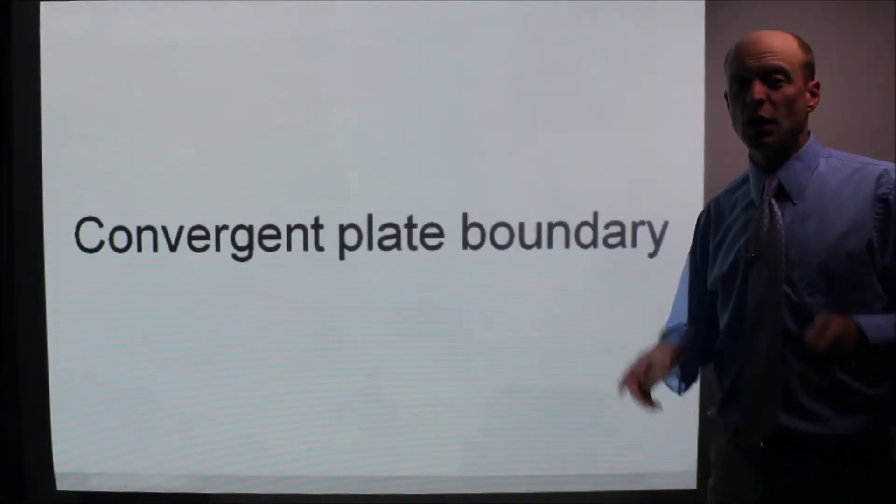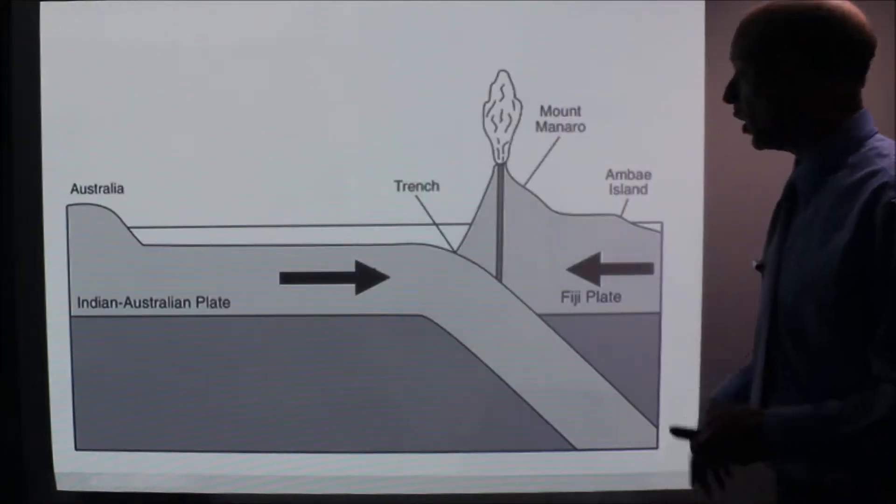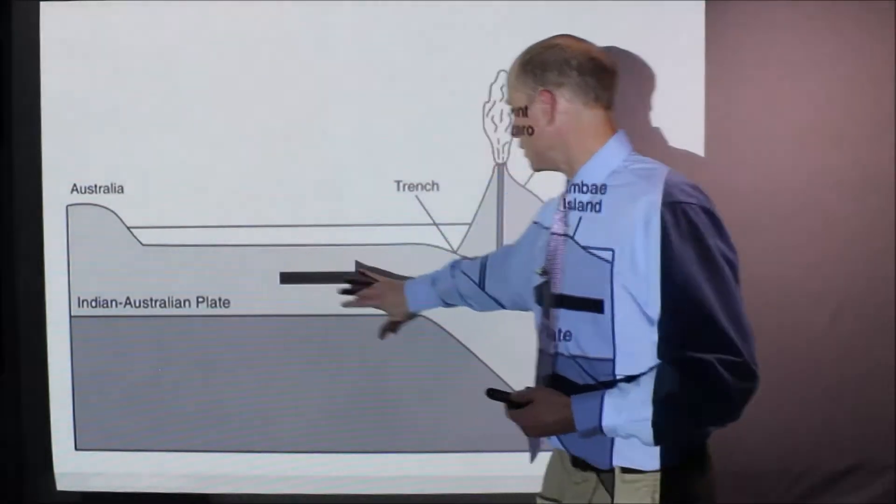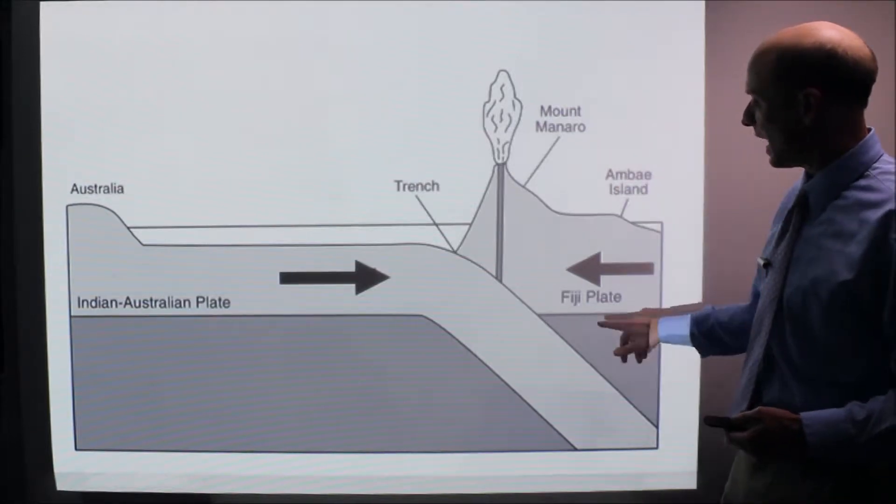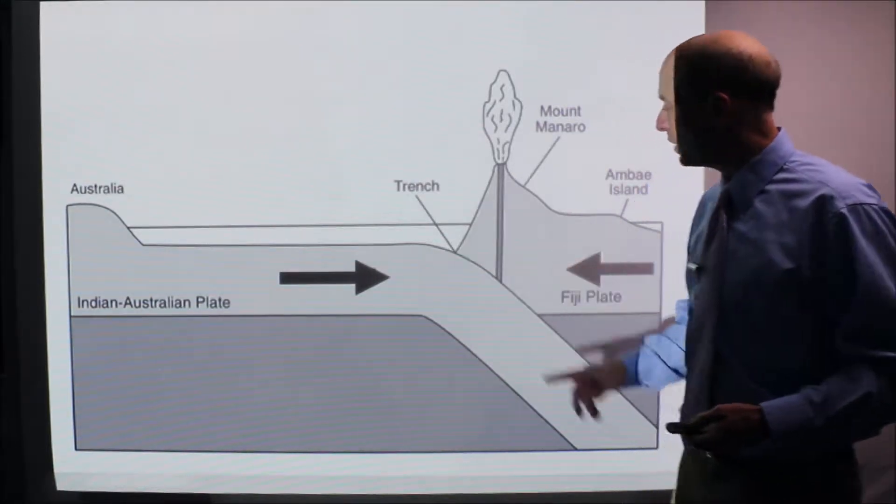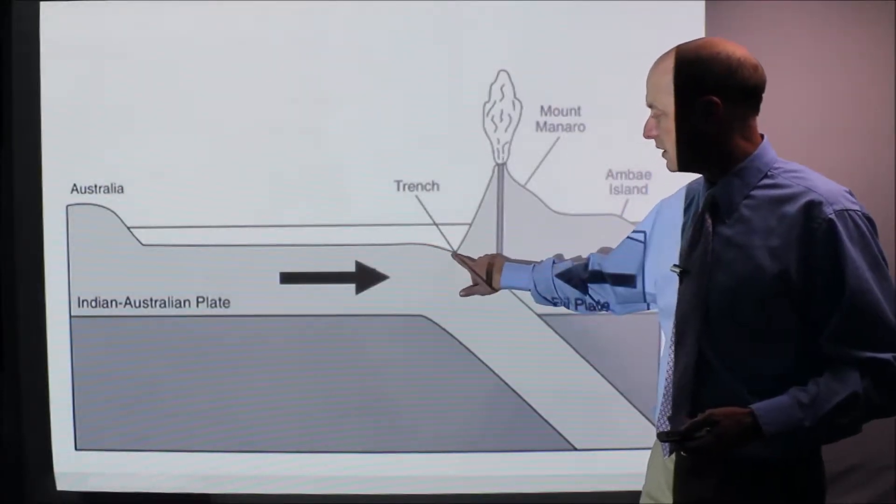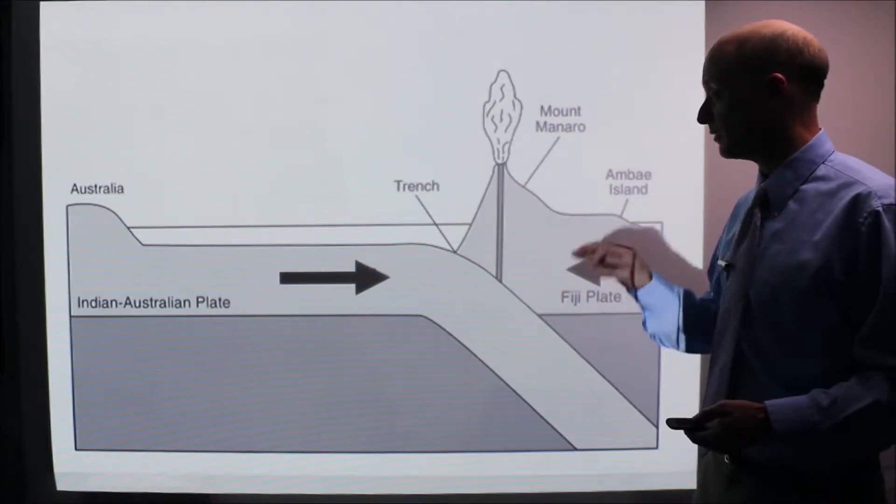Converging plate boundaries. Okay. This is definitely the most complicated one. Here we go. So in this case, what we're showing, let's always look at what we're looking at. We're looking at an ocean crust here, moving into a continent here and you see the arrows. And so a few things that you notice, you always have a trench here where this plate goes down. You have a trench, it's the deepest parts of the ocean. That is a feature of convergent plate boundaries like this.